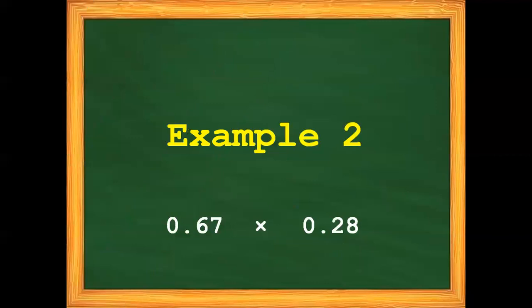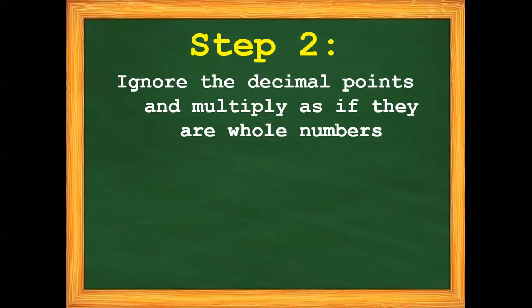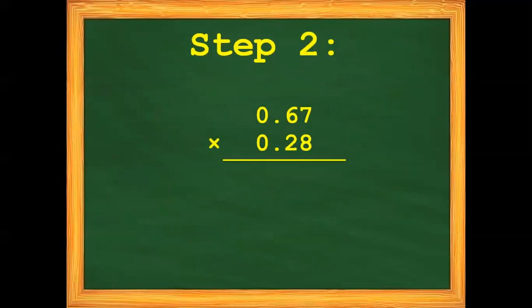So now let's multiply. Example number 2. Step number 1: Arrange the given decimals in column form. Step number 2: Ignore the decimal points and multiply as if they are whole numbers. Let us solve. 8 times 7 is 56, bring down 6, carry 5. 8 times 6 is 48 plus 5 is 53, bring down 3, carry 5. 8 times 0 is 0 plus 5 is 5.